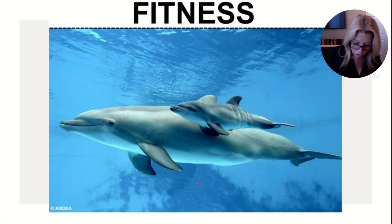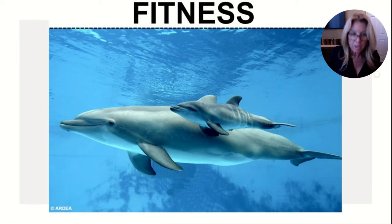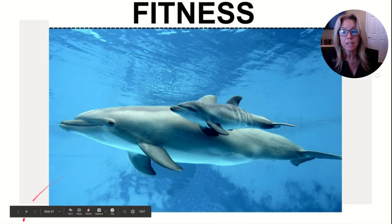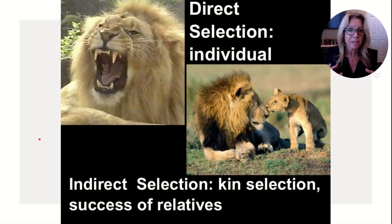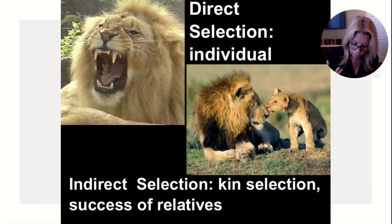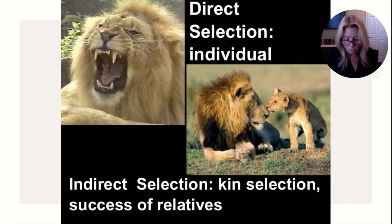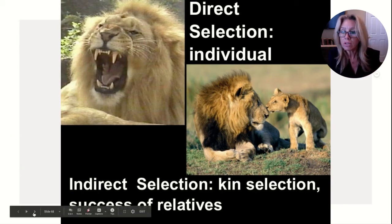Altruism is a behavior that has the potential to decrease the lifetime reproductive success of the altruist while benefiting the reproductive success of another member of the society. Fitness is the ability to pass on your genes. Direct selection is keeping yourself and your offspring alive. Indirect selection is that of your relatives, referred to as kin selection — success of relatives.